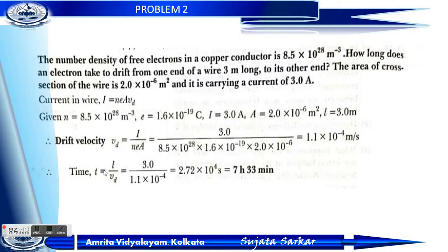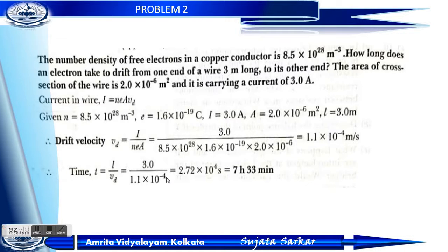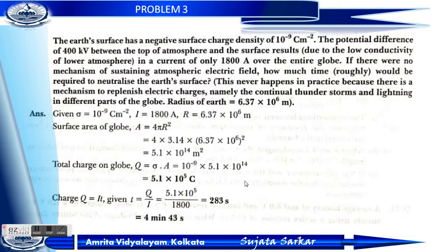Time T equals L by V_D. V_D equals 1.1 into 10 to the power minus 4 meter per second and L equals 3 meter. So T equals 3 by 1.1 into 10 to the power minus 4, which is approximately 2.27 into 10 to the power 4 seconds, or 7 hours 33 minutes.